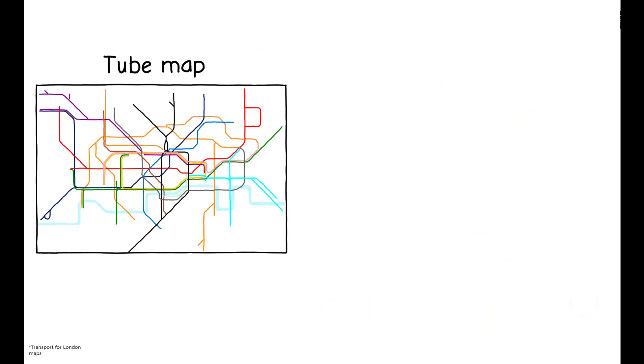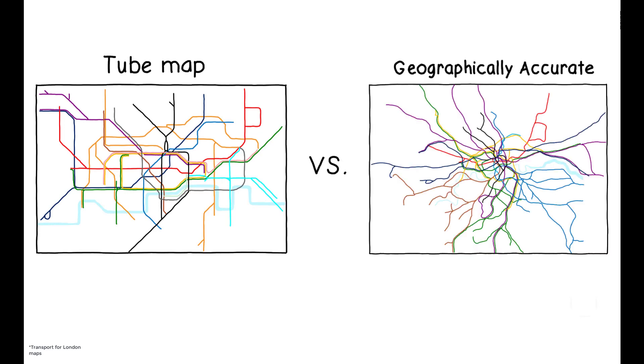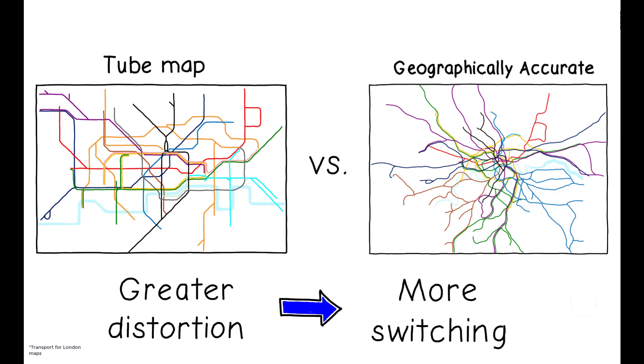As with many transportation schematics, the tube map provides a stylized and therefore distorted picture of London's actual geography. In some neighborhoods, this leads to a large discrepancy between the true distance between two stations and the distance as depicted on the map. These distortions are not constant across London, and the authors find that commuters who either live in or travel to more distorted areas were more likely to have switched to a new route in the post-strike period.